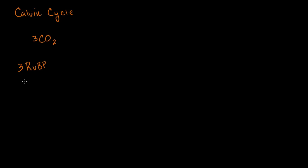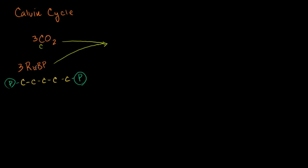If you don't remember what ribulose biphosphate was, it was just a five-carbon molecule with two phosphates on it. These two react in the presence of ribulose biphosphate carboxylase — that big protein I showed you in the last video, called rubisco for short. I'm going to put rubisco in the middle of this whole cycle, because all of this is going on with the rubisco enzyme.